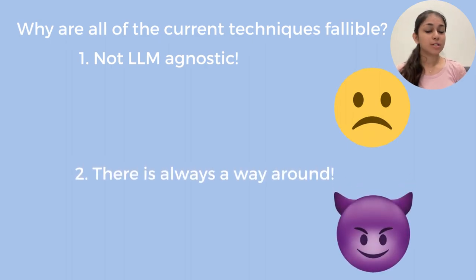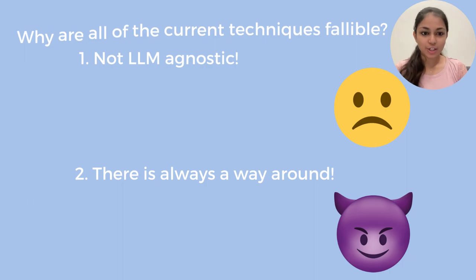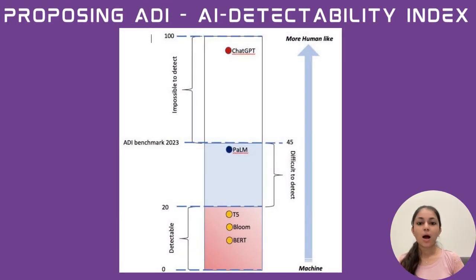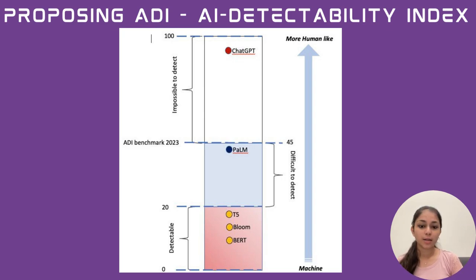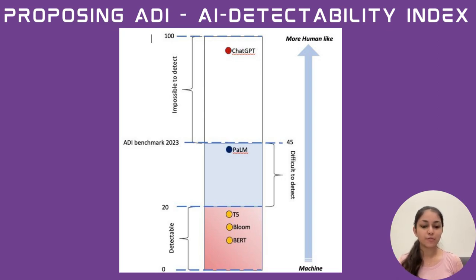So why are these techniques fallible? First, because they are not LLM-agnostic — all of these models are very specific to the language model they are trained on. And secondly, there is always a way around the detection techniques. Our experiments also led us to observe that some language models are very easy to detect while others are not. We therefore also propose ADI, the AI Detectability Index, which aims to index all language models according to how easily or how difficultly a piece of text generated by that model can be detected.